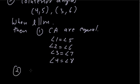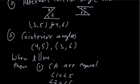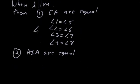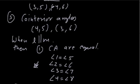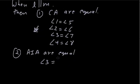The second result is that alternate interior angles are also equal when lines are parallel. That is, angle 3 = angle 5 and angle 4 = angle 6.